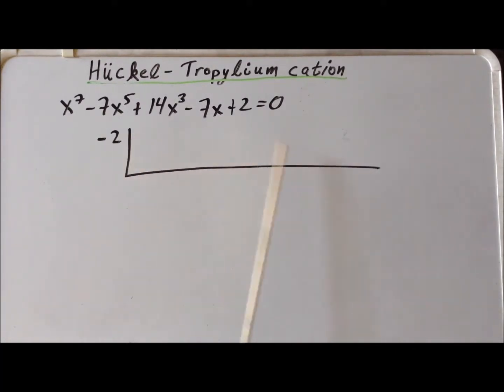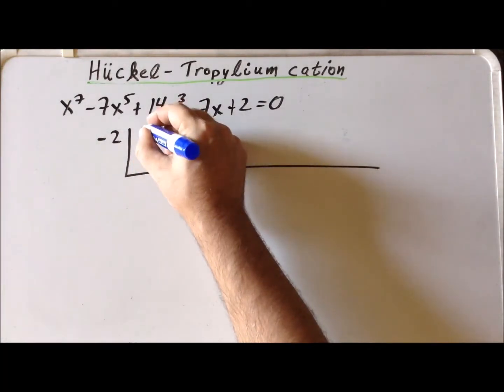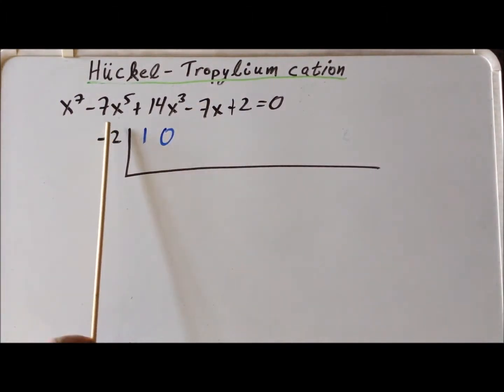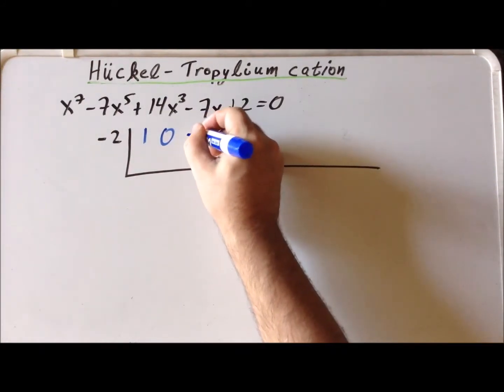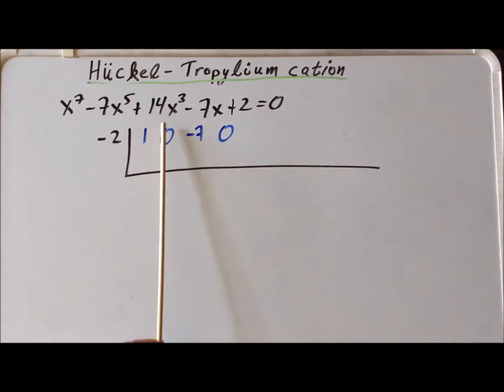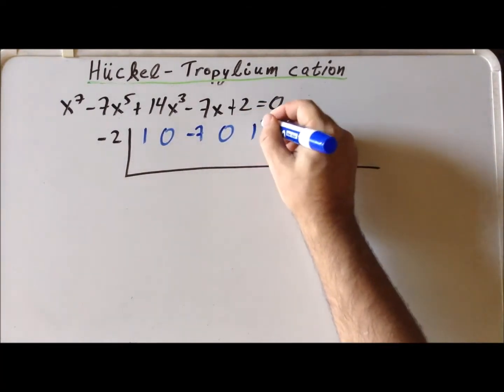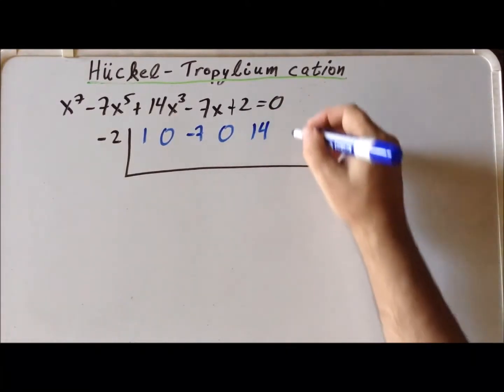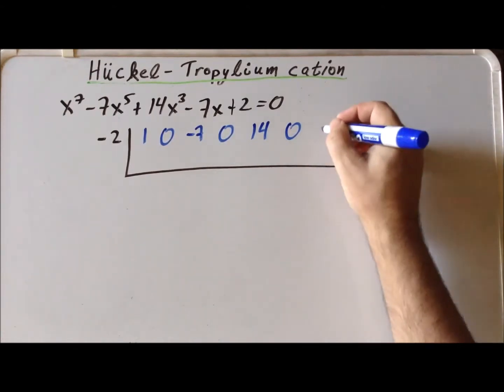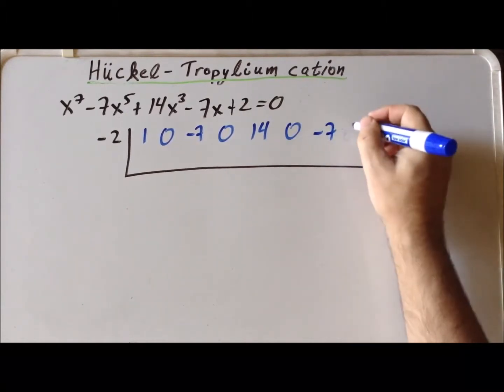Now, on the first row of our table, we are going to write down, from left to right, the coefficients of the various powers of x. So, we notice that x to the seventh has a coefficient of one. There is no x to the sixth, so its coefficient would be zero. x to the fifth has a coefficient of minus seven. x to the fourth power does not exist, so its coefficient is zero. The coefficient for x cubed is 14. x squared, again, does not exist, so its coefficient is zero.